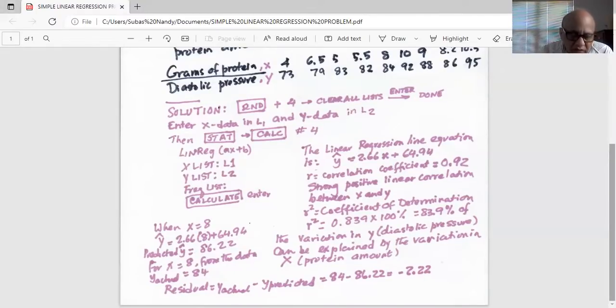We do that very simply in the calculator. We take the slope, which is 2.66, then left parenthesis 8, complete the right parenthesis, plus 64.94. And then hit enter. And the answer is 86.22. That is the predicted value of Y for X equal to 8.